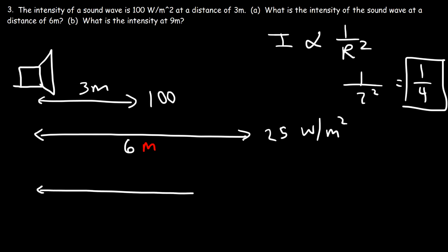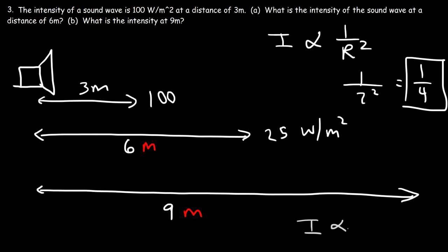Now what if we triple the distance to 9 meters? The intensity is proportional to 1 over 3 squared, which is 1 over 9, so it decreases by a factor of 9. That gives 100 divided by 9, which equals 11.1 watts per square meter. That's how you use the inverse square law to find intensity at different distances.